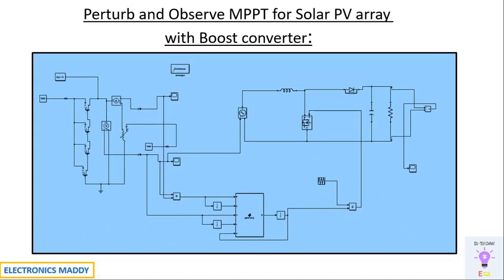This is the MATLAB model of Perturb and Observe MPPT for solar PV array with boost converter. MPPT stands for Maximum Power Point Tracking — it is basically a technique to achieve maximum power from the solar PV array system, giving maximum efficiency. There are various algorithms; some of them are Incremental Conductance and Perturb and Observe. The Incremental Conductance MPPT algorithm is already explained in one of our previous videos — please do watch it, available in the end screen and description.